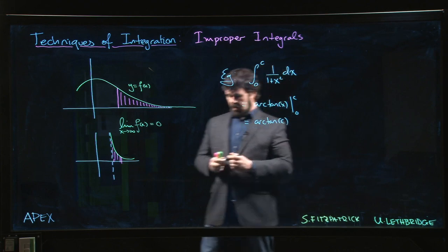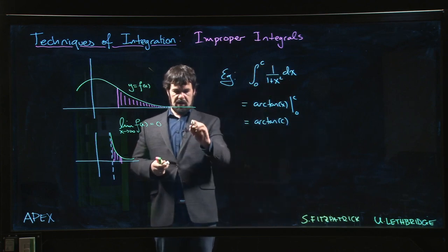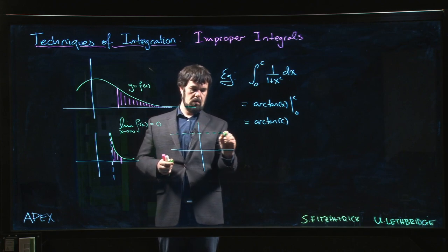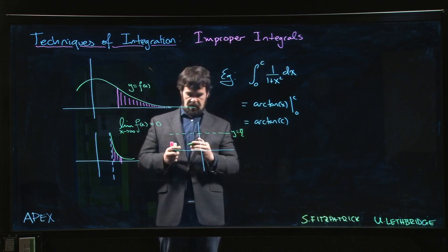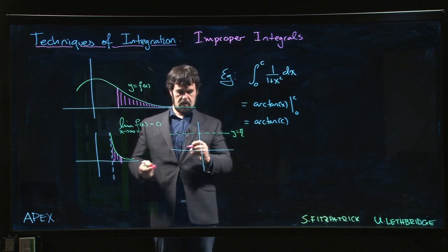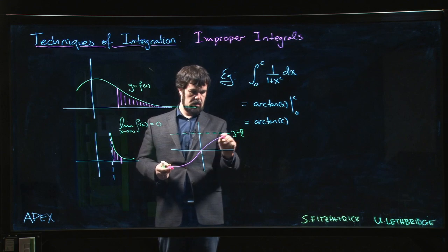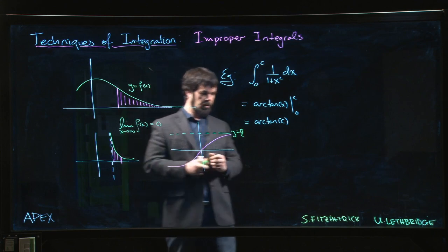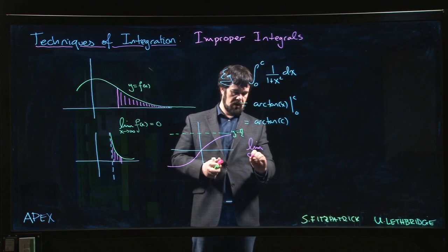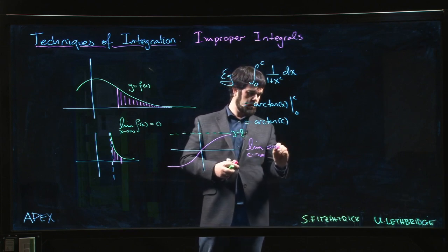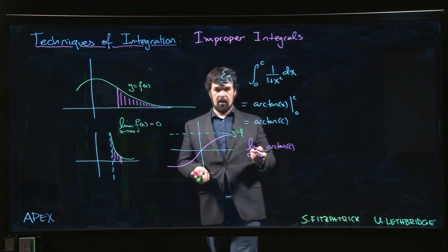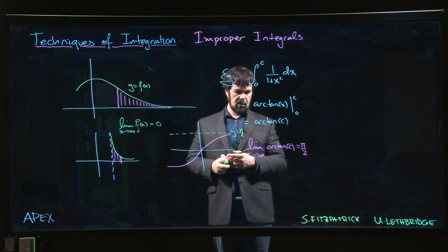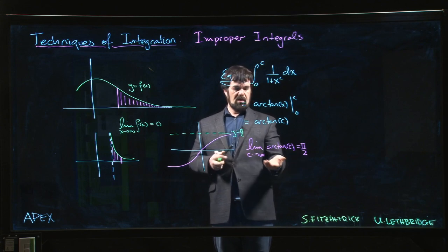And now we ask: what happens to that value as c gets really big? If you remember what the graph of arctan looks like, the graph of arctan happens to have a horizontal asymptote at π/2. Arctan does something like this, so we can actually make sense of the limit. We can say the limit as c goes to infinity of arctan(c) is actually finite - we get a number, we get π/2, because arctan has this horizontal asymptote.